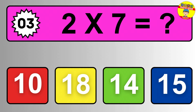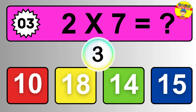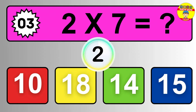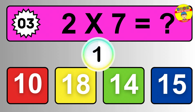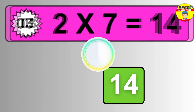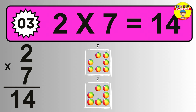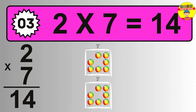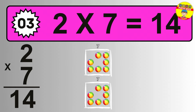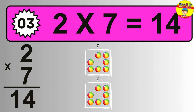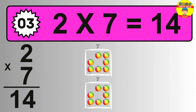Question three. Two times seven equals what? The answer is two times seven is 14. To calculate, we have two groups with seven balls each one. So how many balls do we have? 14 balls.